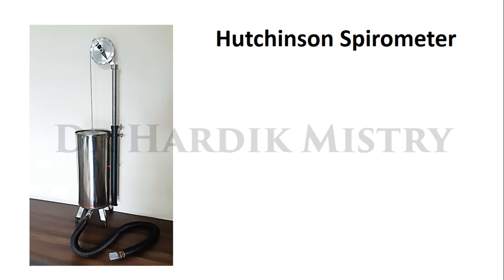This is the outer cylinder and this is the inner cylinder. In between both these cylinders we have to fill water. This is the measurement scale, and this is the corrugated rubber tube. This part is known as the mouthpiece. So this instrument is known as Hutchison's spirometer.